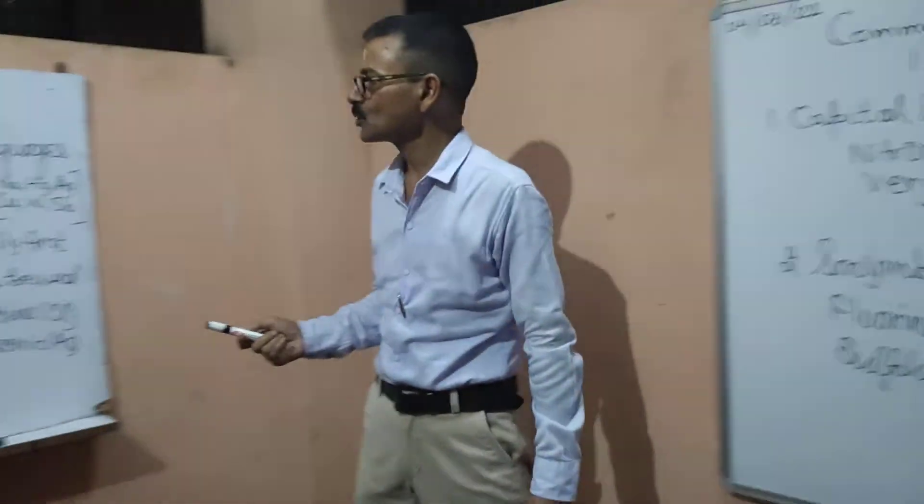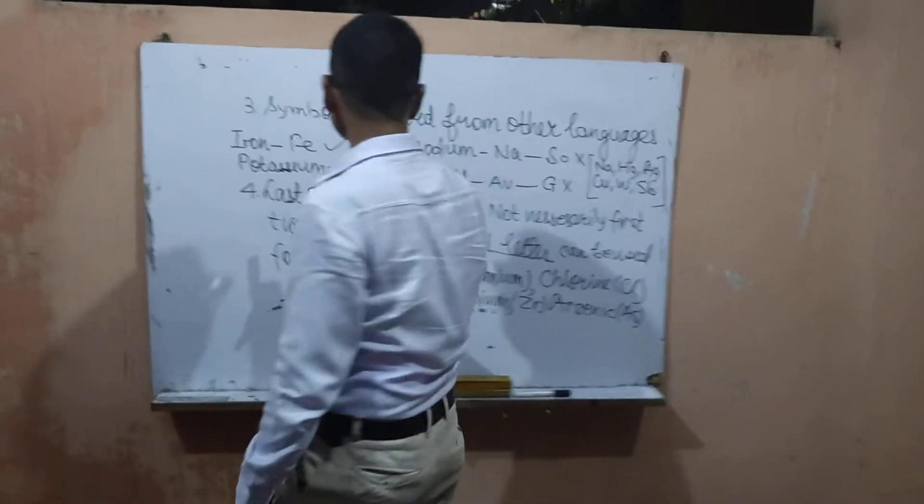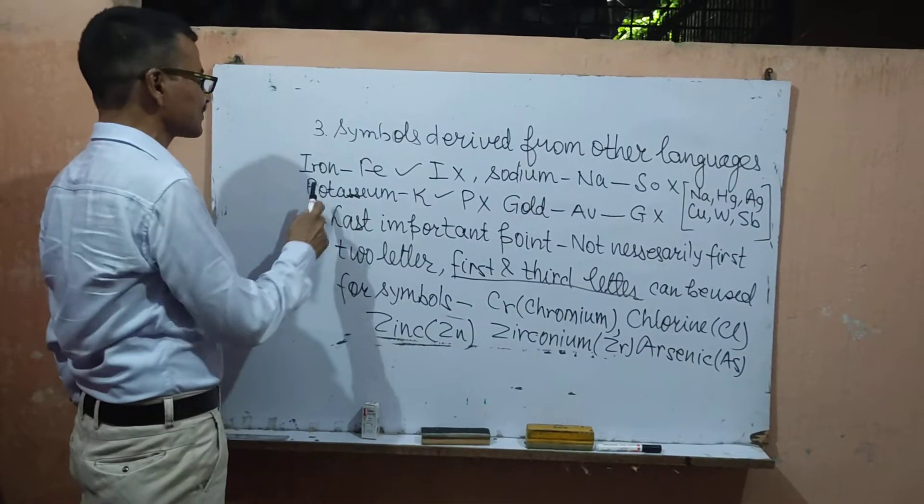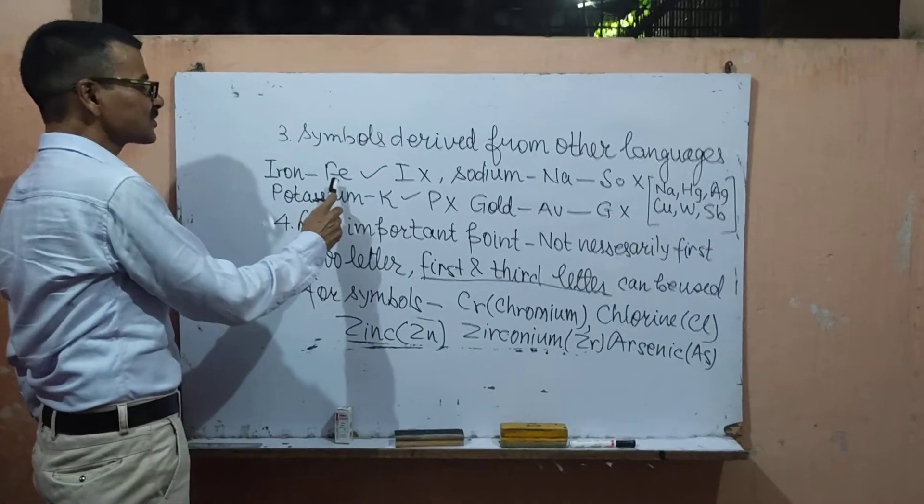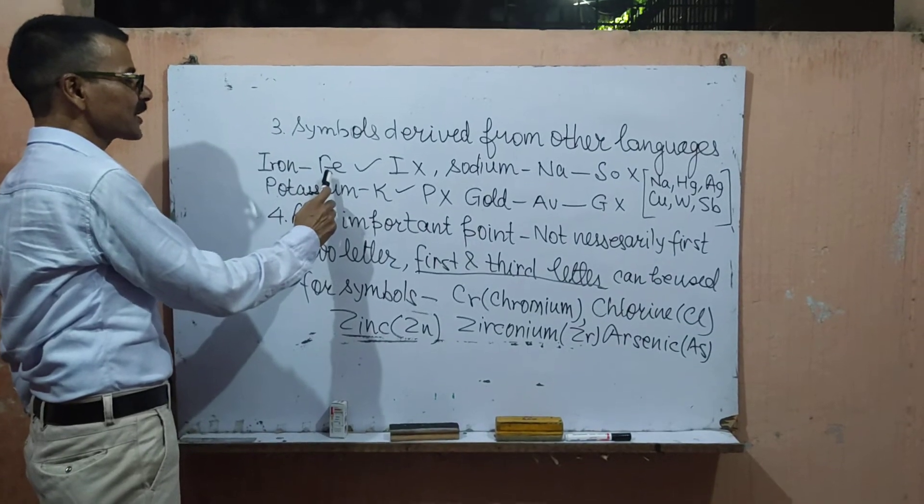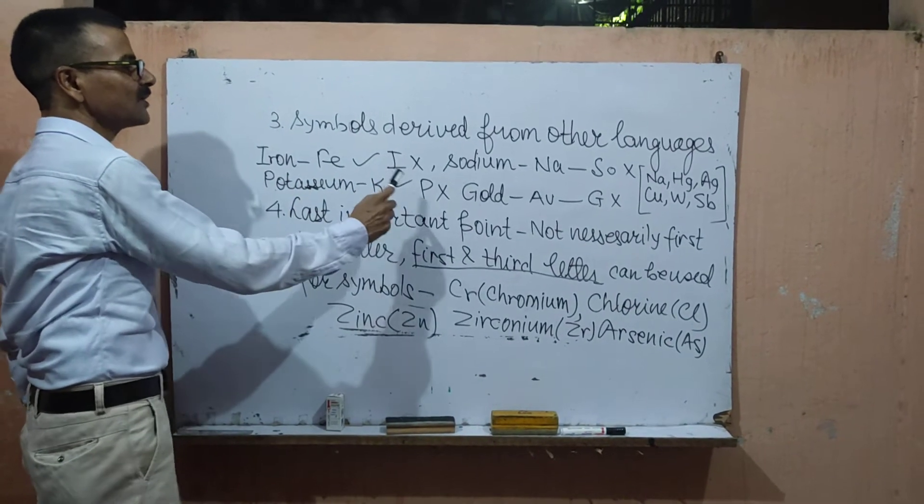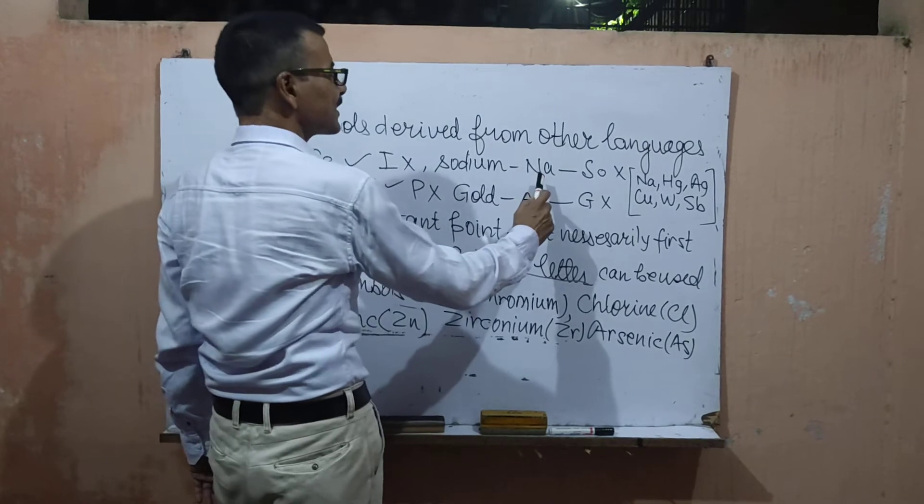Some more mistakes I want you to notice, where the symbols are derived from other languages. Like iron which is taken from its Latin name Ferrum, Fe is the symbol not I. Sodium taken from Latin name Natrium.